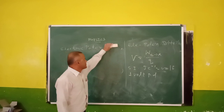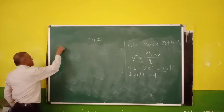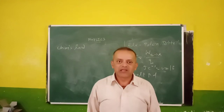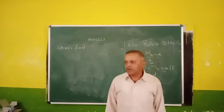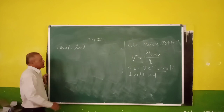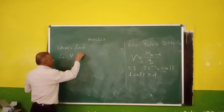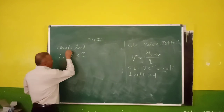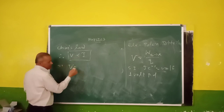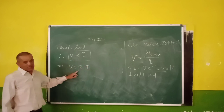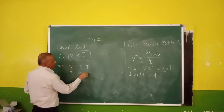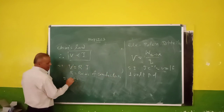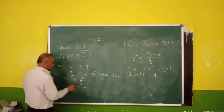Now, the next topic from this chapter is Ohm's Law. Remember, it is very, very important in class 10. According to Ohm's Law, if the physical conditions of the conductor remain constant, then the current flowing through it is directly proportional to the potential difference applied across the conductor. The constant here is R, which is known as the resistance of the conductor. So we can write V = I × R. This is the mathematical form of Ohm's Law.